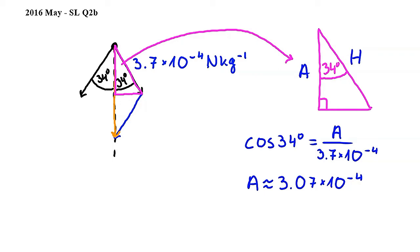Let's go back to the diagram on the left. Here we can see that the orange vector is twice as long as A. In other words, its magnitude is equal to 2 times 3.07 times 10 to the power of negative 4.